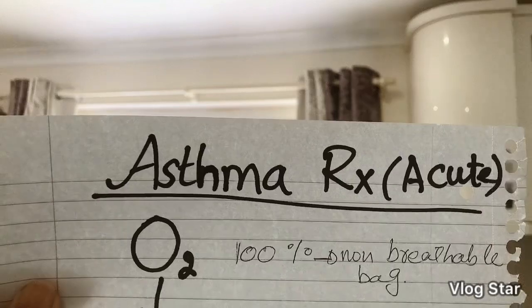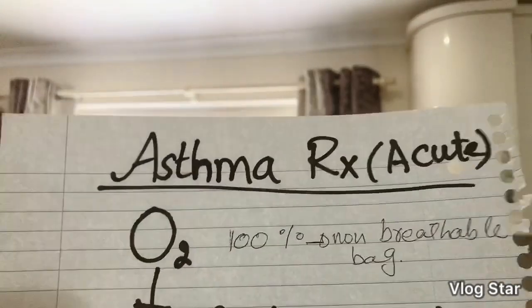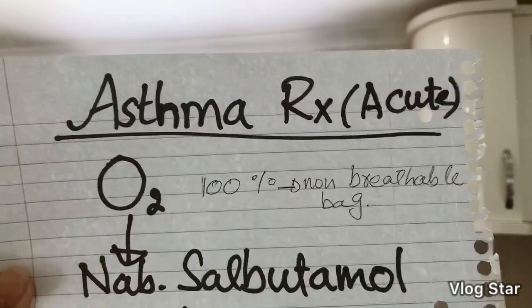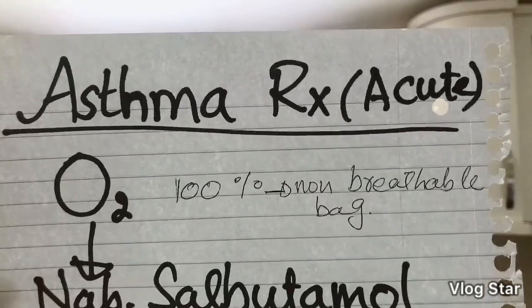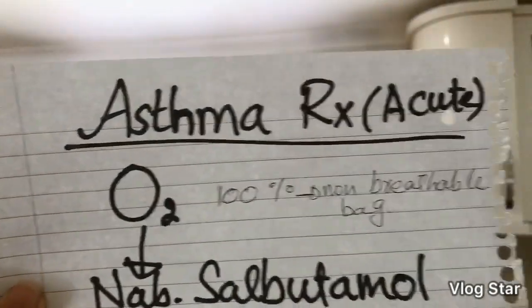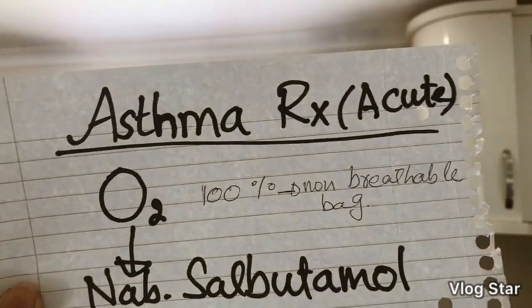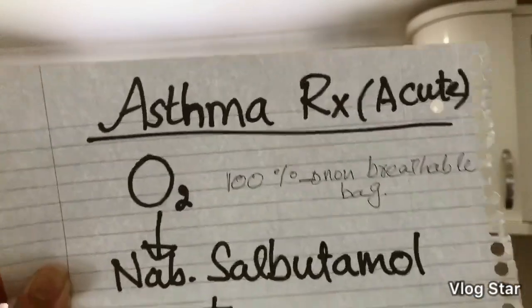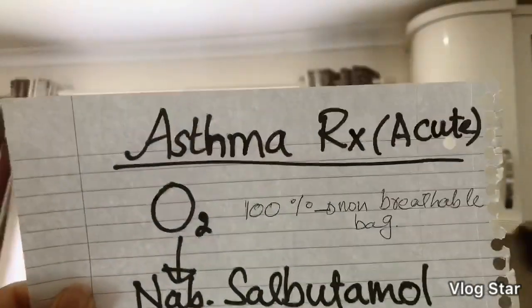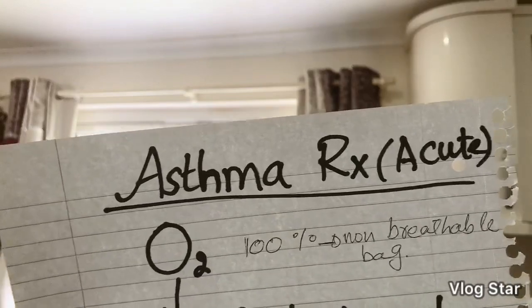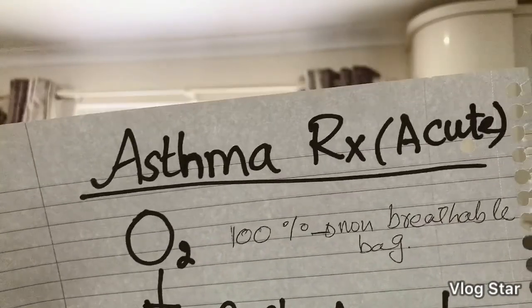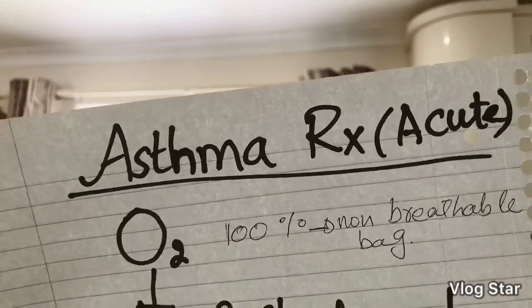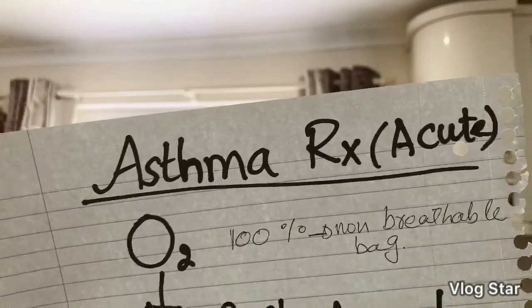Let's get started with asthma guidelines in adults. We're starting with acute asthma treatment — when a person is in status asthmaticus and it's an adult. First, give 100% oxygen via a non-rebreather mask. Remember, this is 100% oxygen via non-rebreather mask, whereas in COPD we use 24% oxygen via a Venturi mask.